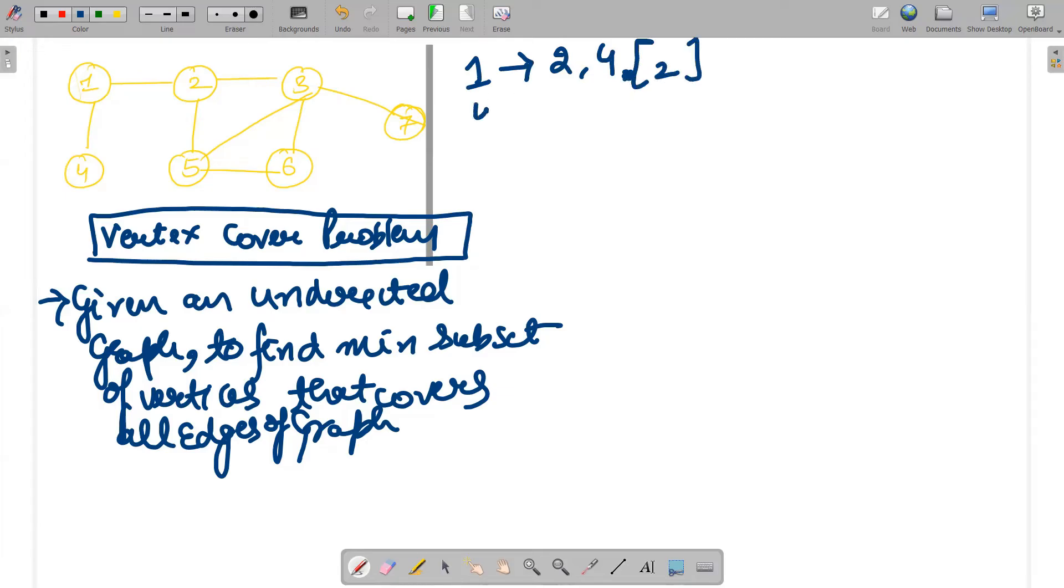If I talk about 4, it is connected with 1, so it is having 1 connection. So if I talk about 2, 2 is connected with 3, 5 as well as 1. So it is having, obviously, 3 connections.